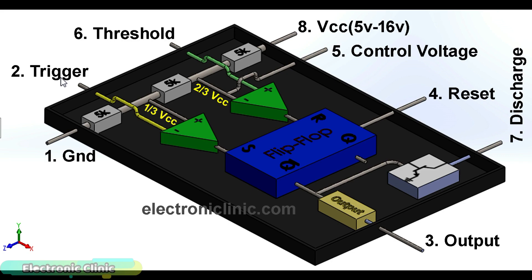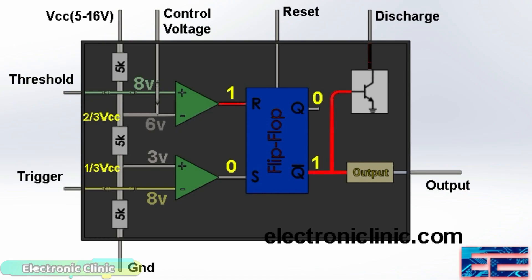The output of voltage comparator 1 is high because the voltage at the non-inverting input is greater than the voltage at the inverting input, which is 6 volts. Similarly, the output of voltage comparator 2 is low as the voltage at the non-inverting input is less than the voltage at the inverting input. The flip-flop outputs 1 which turns on the transistor, connecting the discharge pin to ground. The output of the 555 timer IC will be 0 as the output stage inverter converts 1 into 0.